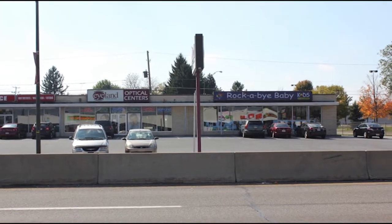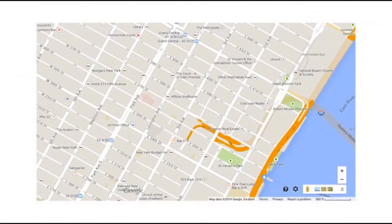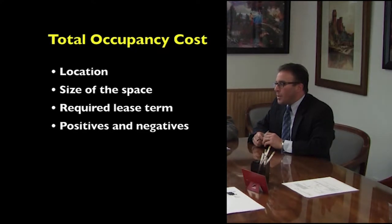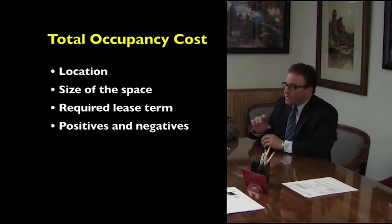Beyond occupancy cost, other variables matter when seeking the best property to lease. A retail tenant targeting high-income earners will choose an upscale shopping complex over a neighborhood center in a depressed location regardless of rental rate differential. An office tenant may insist on an avenue location in New York City and pay significantly more for that address. A leasing agent should assist clients in prioritizing objectives — price may not be the single influencing factor — and rank spaces by location, size, required lease term, and other pros and cons.